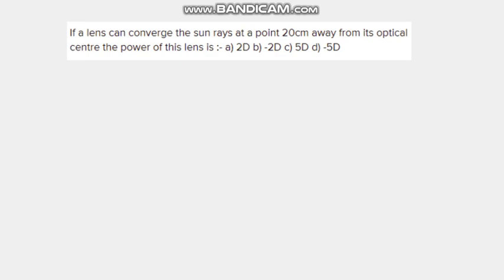Let's start. What is mentioned in the question? It mentions a lens. We have to determine what kind of lens it is. Since it converges the sun rays, it means it's a converging lens, or a convex lens. So this is a convex lens. This lens converges the sun rays falling on it.